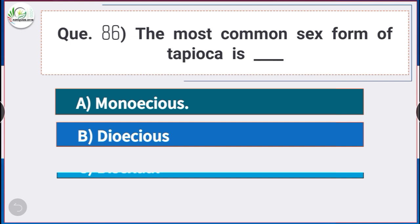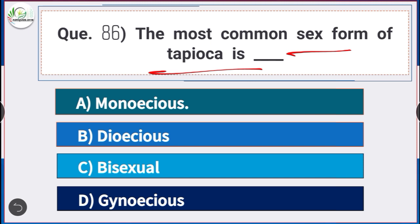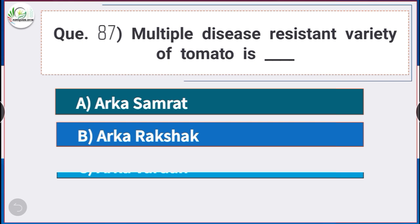Question number 86: The most common sex form of tapioca is — answer option A — monoecious. Question number 87: Multiple disease-resistant variety of tomato is — answer option D — both Arka Samrat and Arka Rakshak are multiple disease-resistant varieties of tomato.